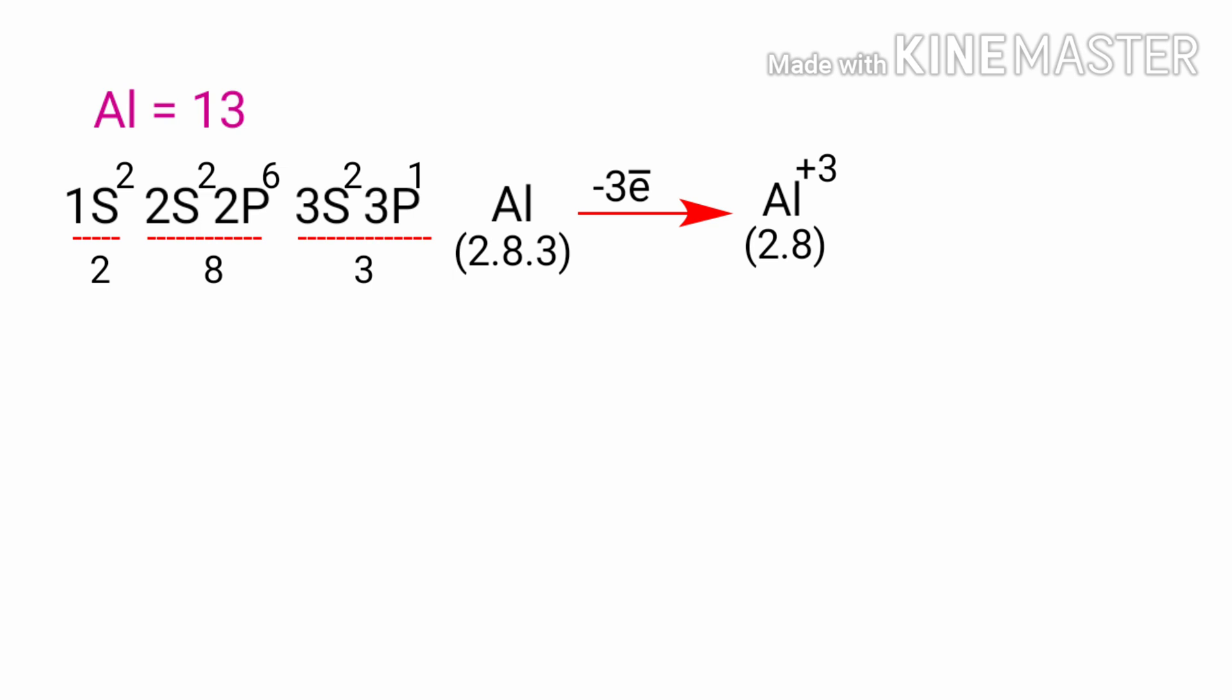It takes less energy for aluminum to donate those three electrons than it does to accept five more electrons to fill the outer shell. If aluminum loses three electrons,